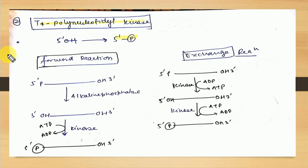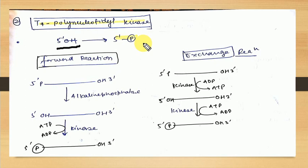The next end modification enzyme used in recombinant DNA technology is T4 polynucleotidyl kinase. This is basically the opposite of phosphatase — where phosphatase removes phosphate, kinase adds phosphate. T4 refers to the source, which is the T4 bacteriophage. T4 polynucleotidyl kinase can perform both forward reaction and exchange reaction.